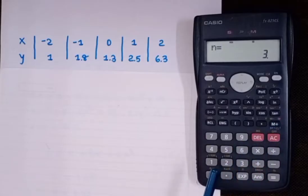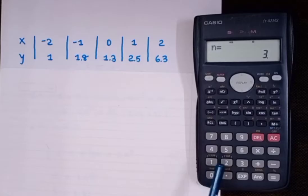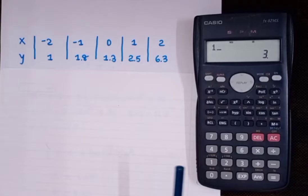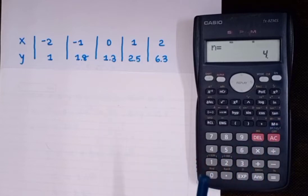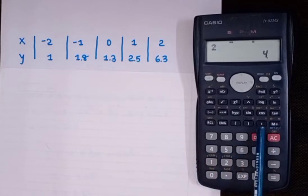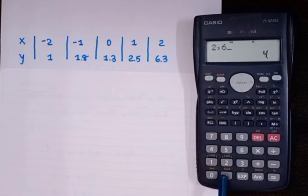Then input the third value: 0 comma 1.3 — press M+. Don't press any other keys, otherwise you'll get a syntax error. Then input the fourth value: x is 1, y is 2.5 — press M+. The last value is 2 comma 6.3 — press M+.